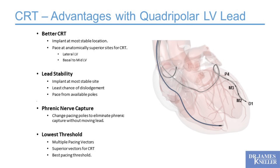Another advantage is managing phrenic nerve capture. The phrenic nerve runs over the lateral left ventricle, and if your CRT lead is next to it, pacing can capture the phrenic nerve and give your patient hiccups. Before quadrupolar leads, that meant trying to reposition the lead away from the phrenic nerve, risking dislodgement. With quadrupolar leads, you implant in the best spot and program around phrenic nerve capture because you have so many more pacing options. Additionally, if all poles are comparable, find the one with the lowest threshold for most battery life. That diagram shows the ideal scenario with all poles along the lateral left ventricular wall.